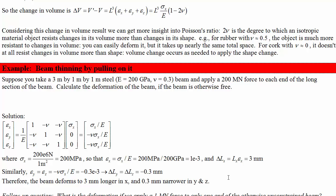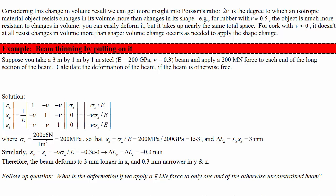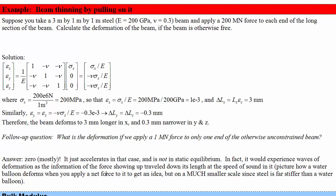Follow-up question: what's the deformation if we apply a 1 MN force to only one end of the otherwise unconstrained beam? The answer is 0 — it's just going to accelerate. In a fast situation, you might get a wave of deformation as the information of the force travels down its length, similar to slapping a water balloon where a deformation wave travels across it.